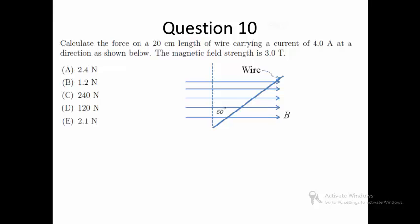Like in the simplified situation, we cannot simply use the formula F equals BIL. This is because effectively only the component of magnetic field which is perpendicular to the wire will generate the force.